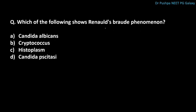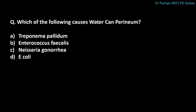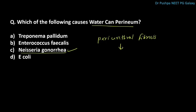Which organism shows Nagler's reaction? The correct answer is Clostridium perfringens. Which organism shows Reynolds-Braude phenomenon? The correct answer is Candida albicans, also called the germ tube test. Which organism causes watering-can perineum? The correct answer is Neisseria gonorrhoeae. In watering-can perineum, there is extensive periurethral fibrosis leading to multiple abscesses and fistula in the perineum.